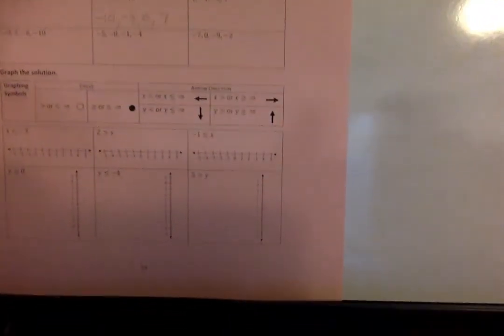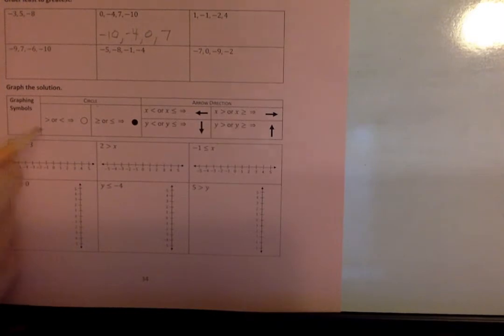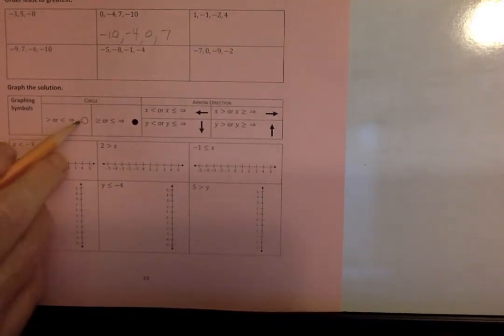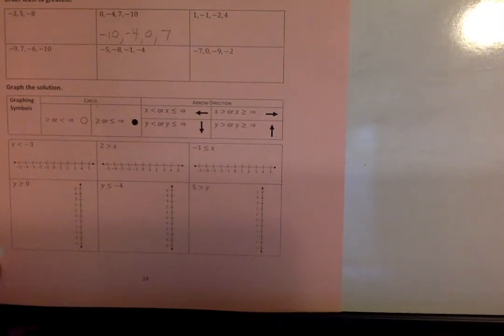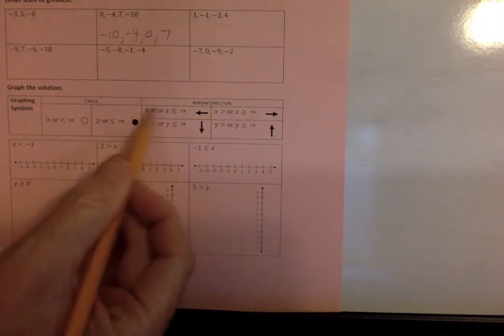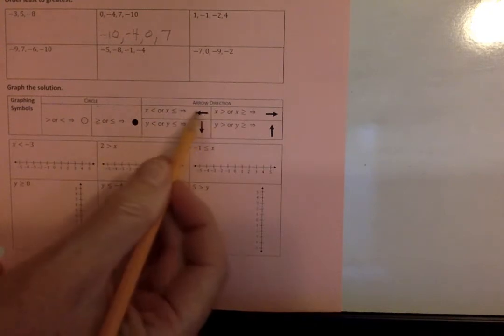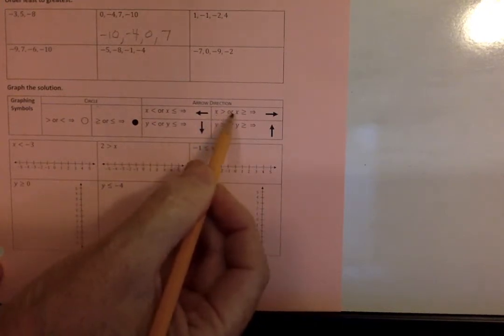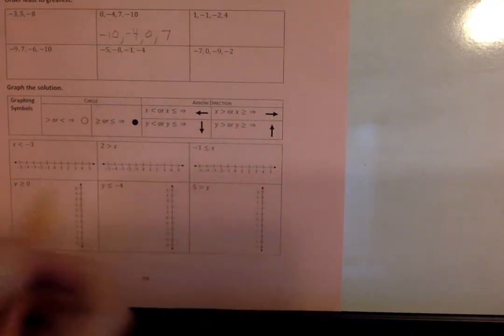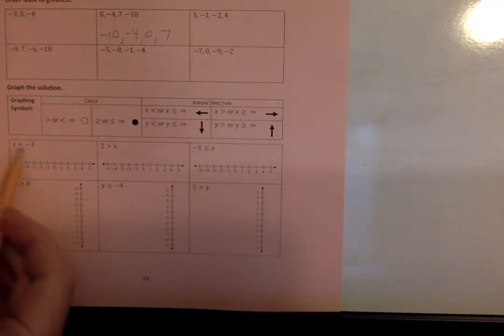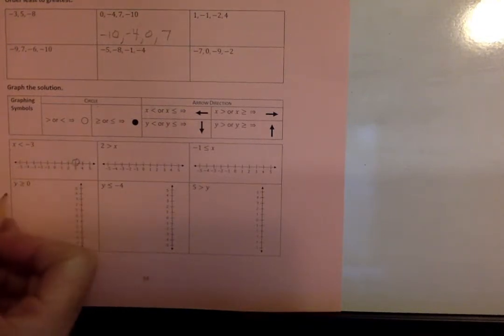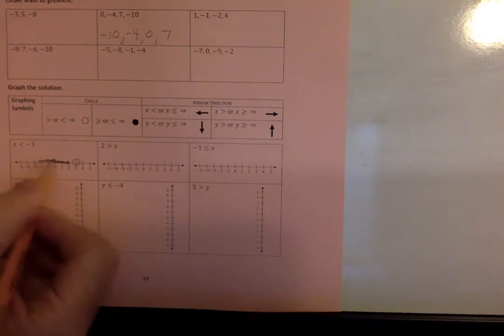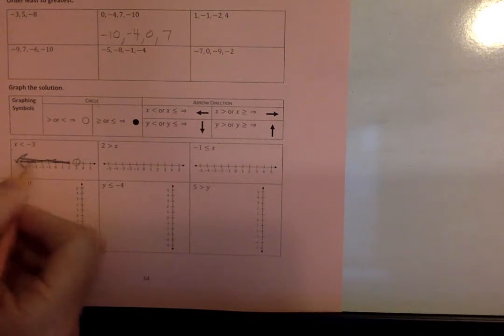Further on down, we get our graphing symbols here. Greater than or less than, our open dot. If that has or equal to, think of it as more ink needed here and here. So more ink is needed here. Then if the variable's on the left side, x is less than or x is less than or equal to, we're going to shade to the left. X is greater than or x is greater than or equal to, shade to the right. And we'll do a couple here. Start with this one. X is less than negative 3. It's an open dot because it's less than. So it's less ink and it's pointing to the left. So that means we shade everything to the left.